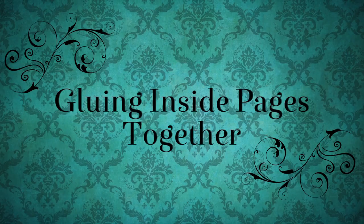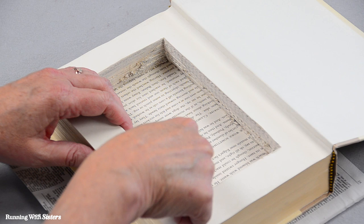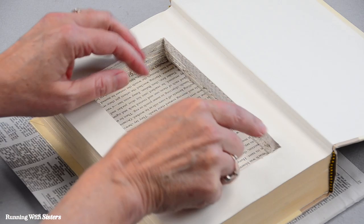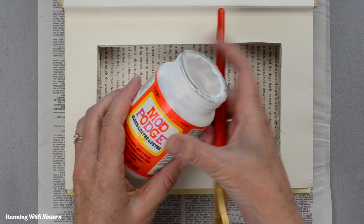So we finished hollowing out the inside of the book just by cutting the pages out. Most of it came out really smooth. We have a couple spots that got a little glitchy. That happens. And now we're going to glue the pages together on the inside with the Mod Podge, just like we did for the pages on the outside.